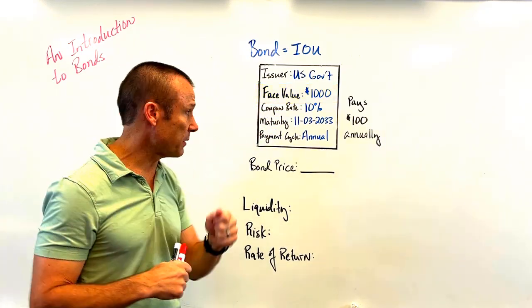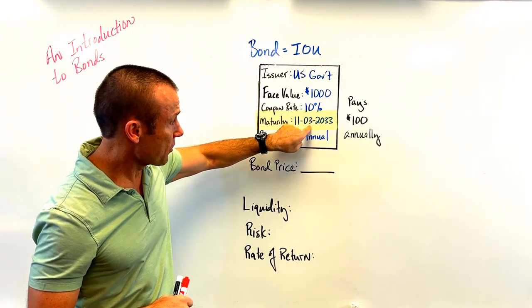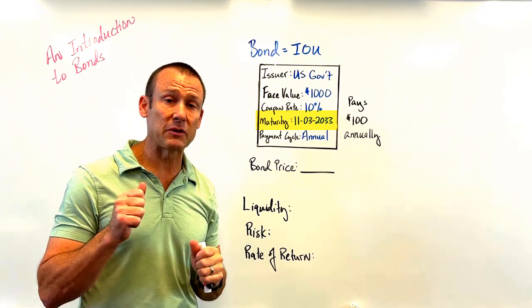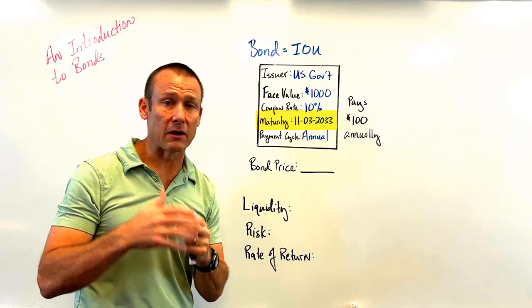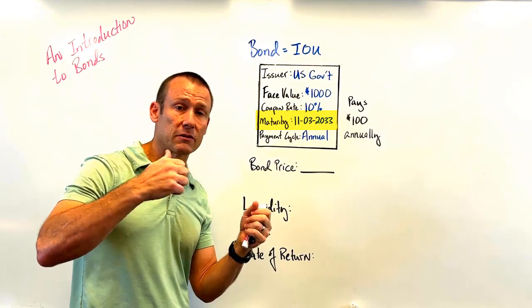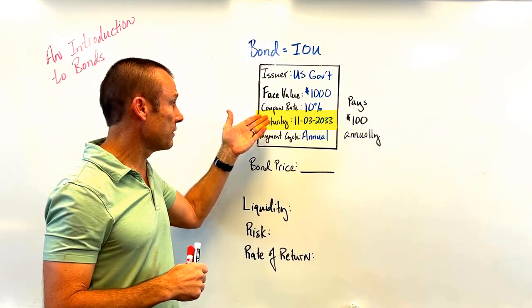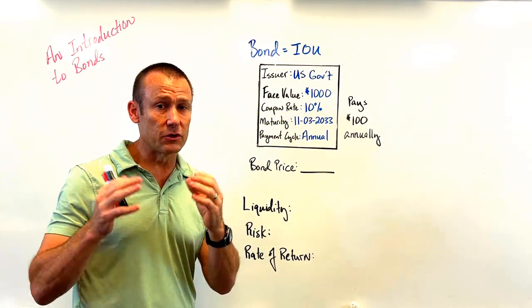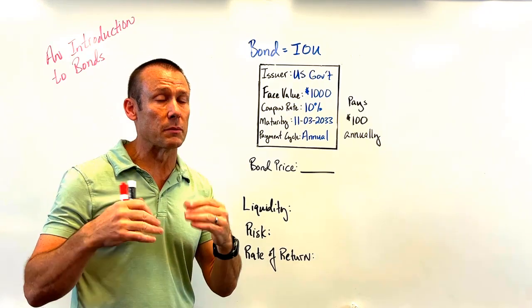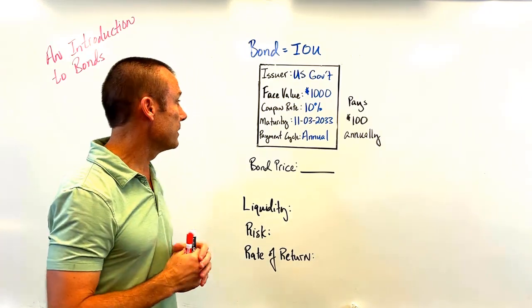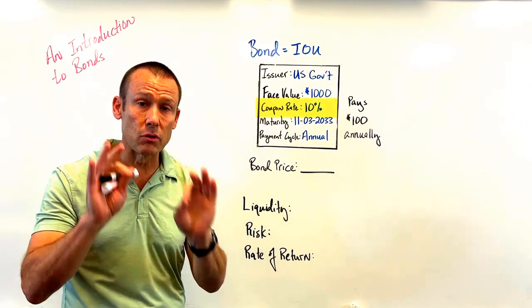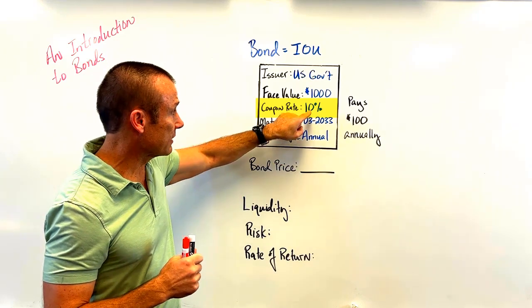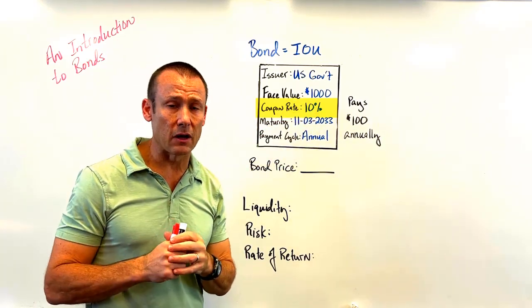Whoever has this piece of paper when it matures — and it's going to mature on November 3rd, 2033 — I've got to pay them $1,000. That's basically paying you the principal back. You loaned me $1,000, I've got to pay you that back on the maturity date. But you're not going to loan me money just to get your money back — you want interest. So now there's a coupon rate, also printed on the bond, and it says 10%.